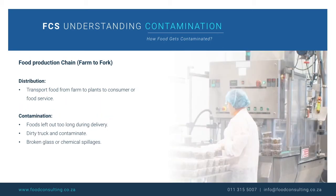Distribution is the means by which we transport food from the farm to processing plants to the consumer or food service facility, such as a restaurant or hotel kitchen. This step may involve transporting foods just once, such as trucking produce from a farm to a local farmer's market, or it may involve many stages. For example, frozen hamburger patties might be transported from a meat processing plant and then to a larger supplier, stored for a few days in the supplier's warehouse.